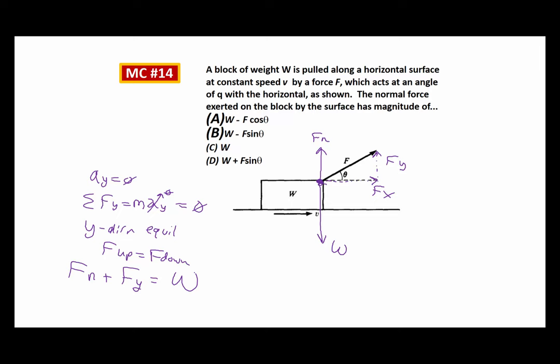I'd like to think of that applied force as having x and y components, and I'm just going to look at that little Fy. So: normal force plus force applied y equals all forces going down, W. They don't give me Fy directly, so I need to convert it. Fy is the opposite side — with theta — so it's F sine theta. The hypotenuse is F, so Fy equals F sine theta.